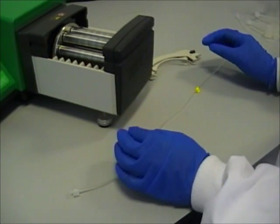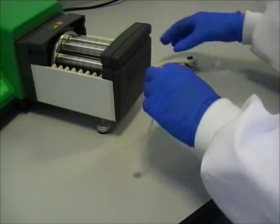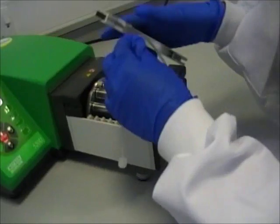First of all you need to get ready your peristaltic pump. Take your manifold tubing and insert it into the cassette.